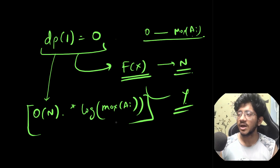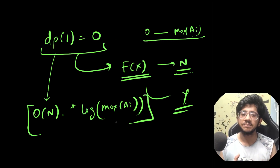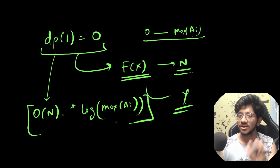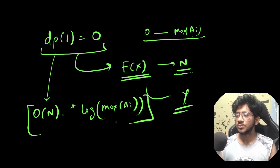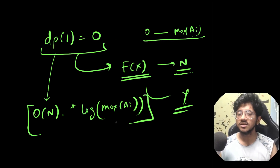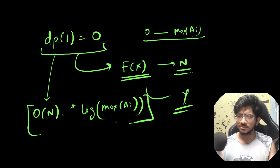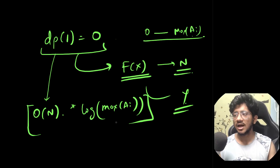This is a very beautiful problem — binary search on the answer acts as the initial indicator to find what values can be the answer, and the check is a really elegant DP on tree. This technique of binary search on value combined with tree DP appears in other game-based and tree-based problems as well. Make sure you practice and code this up.